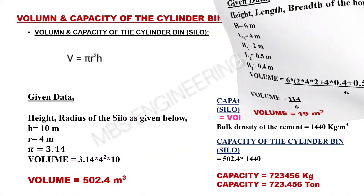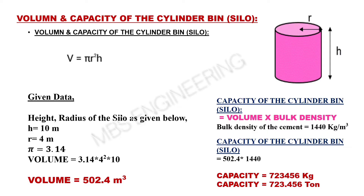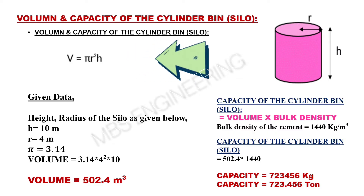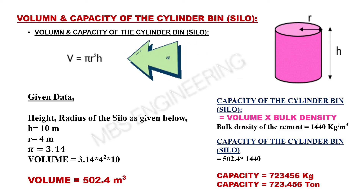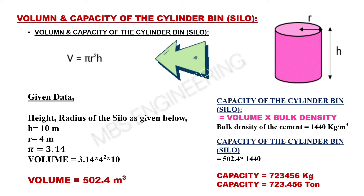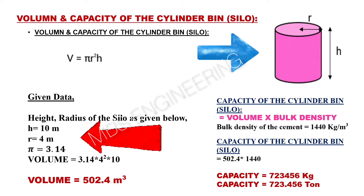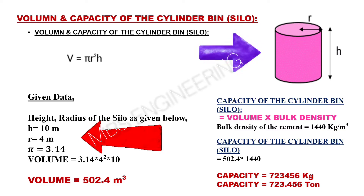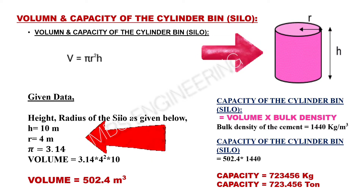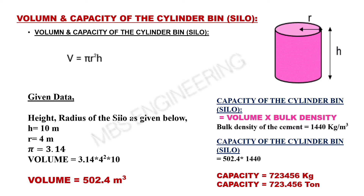Next, we learn about how to calculate the volume and capacity of the cylinder bin or silo. The volume calculation formula for cylinder bin or silo is Pi r² h. Please refer to the cylinder bin or silo snaps and the given data. H is 10 meters, R is 4 meters, Pi is 3.14. Based on the above equation and given data, the volume of the cylinder bin or silo is 502.4 cubic meters.